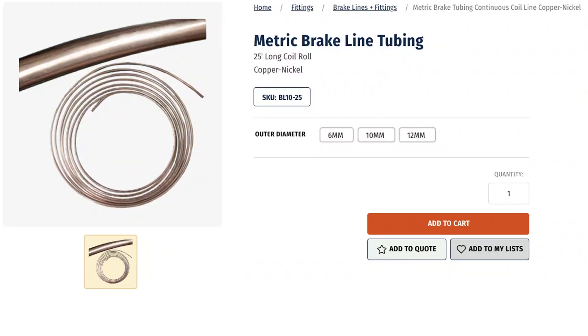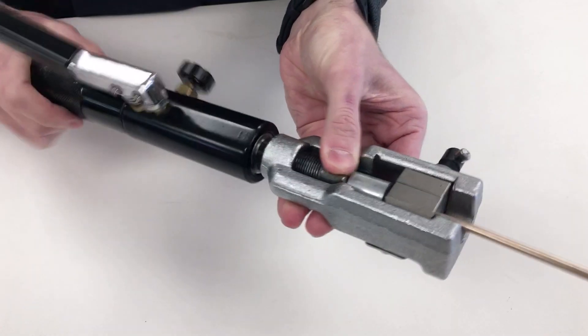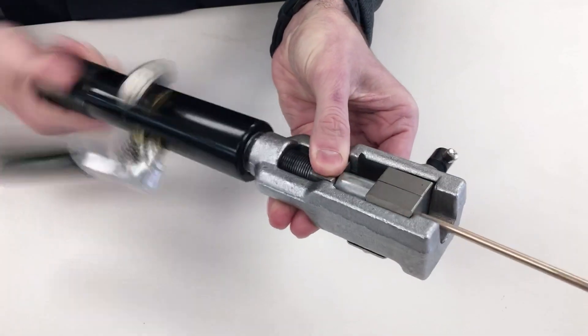Bellmetric stocks 25-foot rolls of brake line in both metric and inch diameters. Before brake line installation, a proper flare must be created.